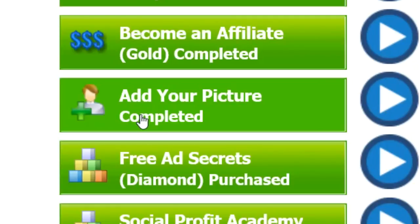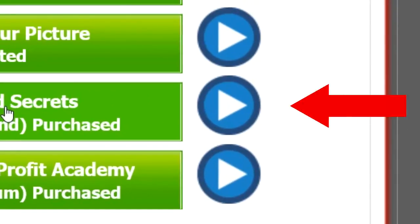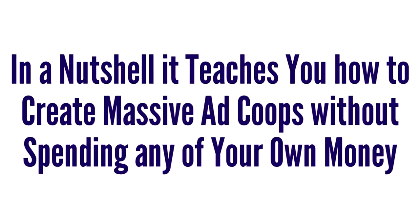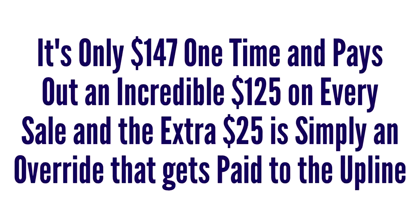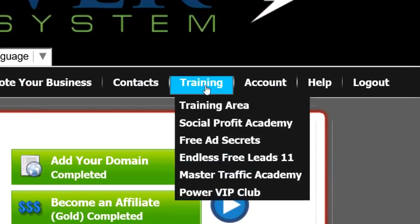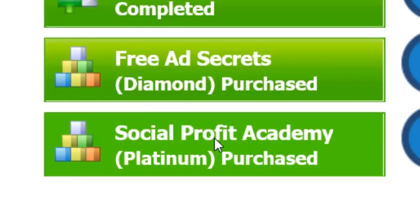The next button on the Getting Started tab is about adding your picture — just click on it and follow the simple steps to upload your personal picture. The button right below that is called Free Ad Secrets. In a nutshell, it teaches you how to create massive ad co-ops without spending any of your own money. Members love this course along with its exponential $100 commissions. It's only $147 one time and pays out an incredible $125 on every sale — the extra $25 is simply an override paid to the upline. You can access Free Ad Secrets by hovering over Training, then clicking where it says Free Ad Secrets.